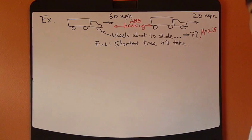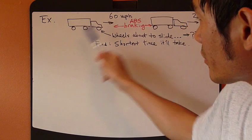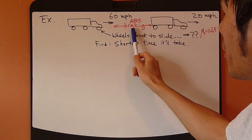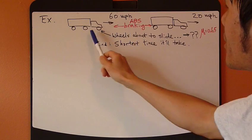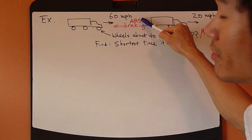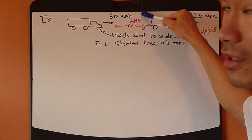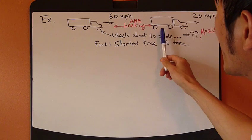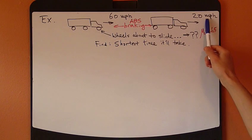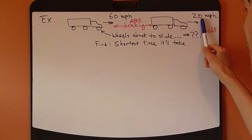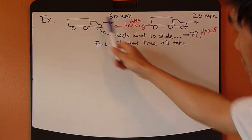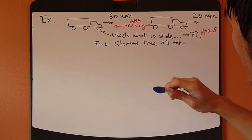Let's do an example. We have a truck traveling at 60 miles an hour, then it starts to apply brake. The brakes are equipped with ABS system, which is anti-slip braking system. The final scenario is the velocity has reduced to 20 miles an hour, so initially it's traveling at 60 and in the end it's at 20.